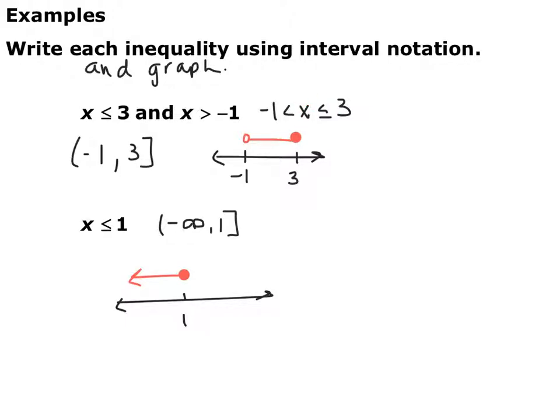For x less than or equal to positive 1, the interval notation is (-∞, 1] — a bracket because we want to include it. On the graph, we have a closed circle at 1 with everything less than 1 shaded going toward negative infinity.